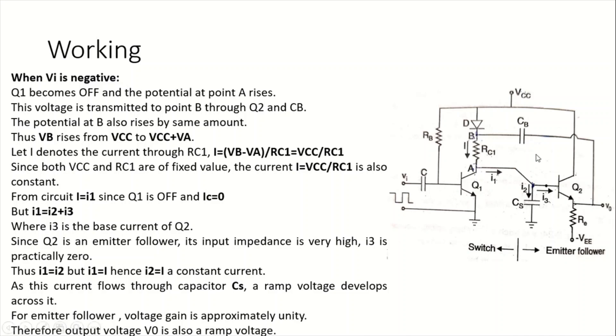Where I3 is the base current of Q2. Since Q2 is an emitter follower circuit, one of the important characteristics is it will have a higher input impedance. When this particular amplifier is having higher input impedance, it never allows current to flow through it. So practically, the base current I3 which is flowing through the base of an emitter follower circuit will be zero. Then I1 equals I2, but I1 already equals I, so I2 equals I.